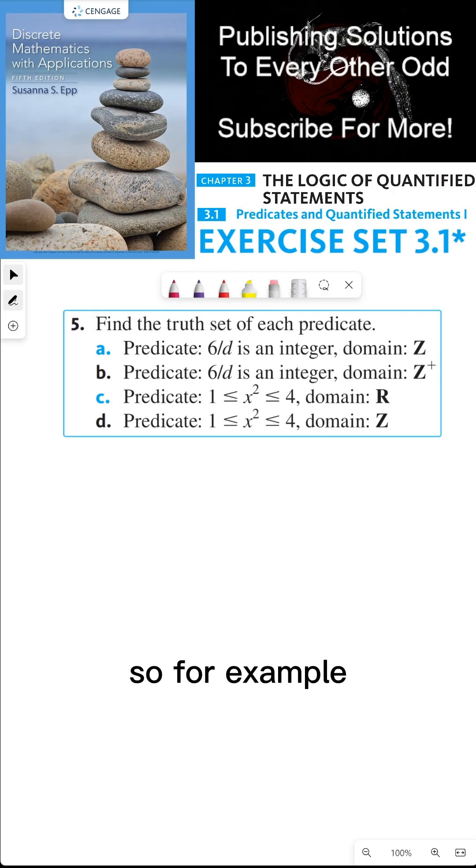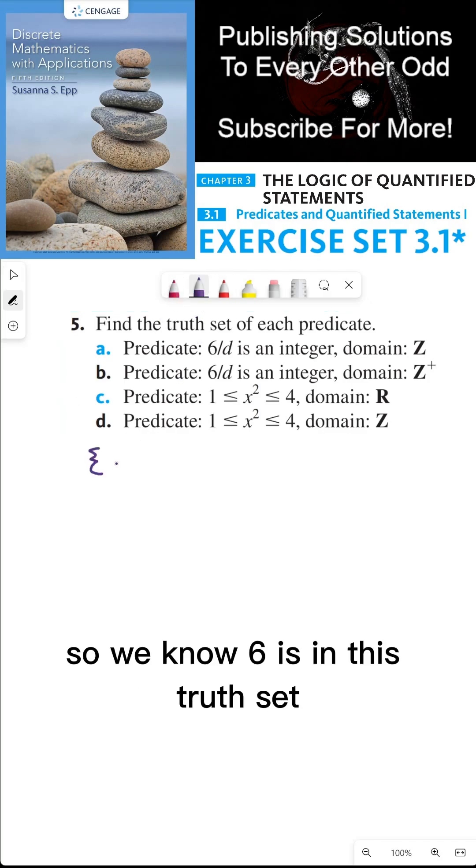So for example, if D were to be 6, then 6 over 6, which is 1, is an integer. That's true. So let's create this set. So we know 6 is in this truth set. What else is in this truth set?